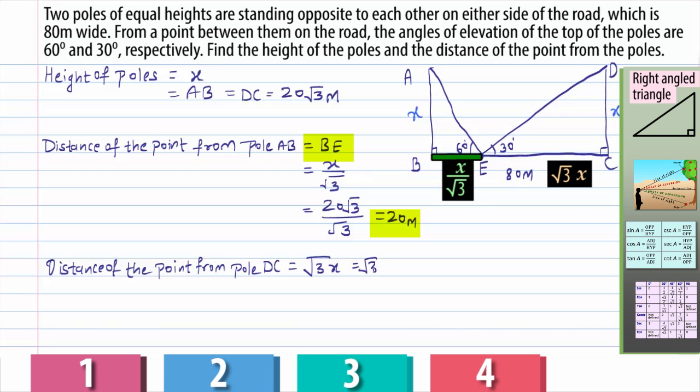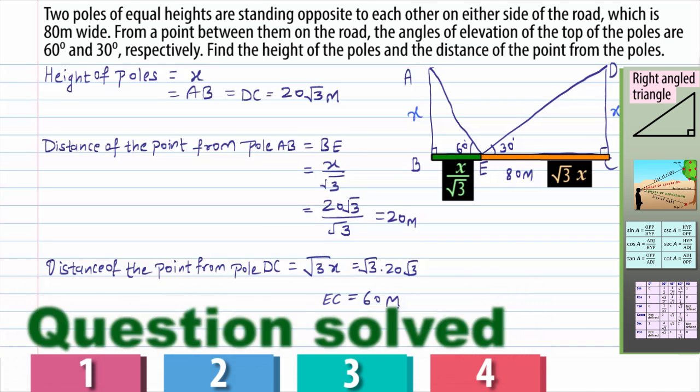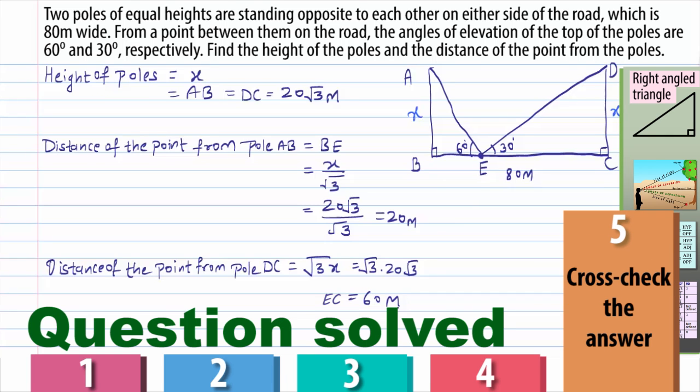Now, very easily we can get the value of BE and EC as we have to just put the value of X. Hence, BE is 20 meters and EC is 60 meters.